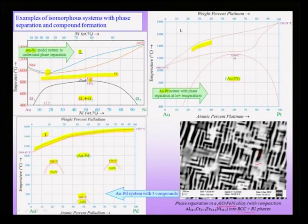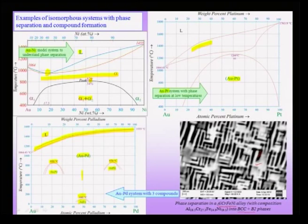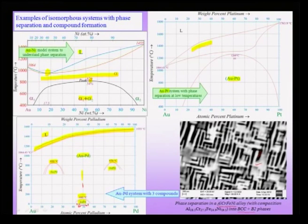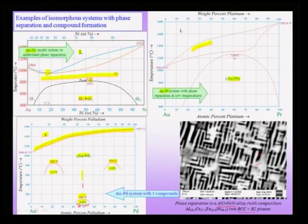If we look at a compound which forms close to the equimolar composition of 50-50, the important point is that unlike valence compounds, these compounds exist over a range of compositions. It is not just the 50-50 gold-palladium alloy that forms the intermediate compound, but a range of compositions which all show compound formation. To accommodate this off-stoichiometry, either there is a vacancy in one of the sub-lattices or there is an anti-site defect. So we have seen three examples of real systems which show a tendency for either phase separation or compound formation.